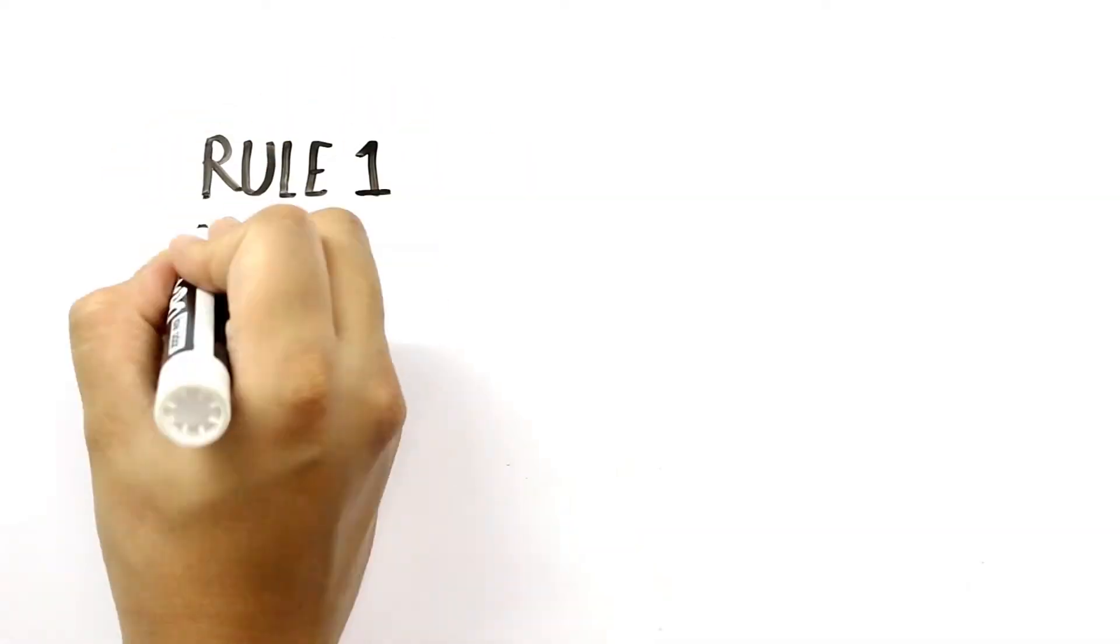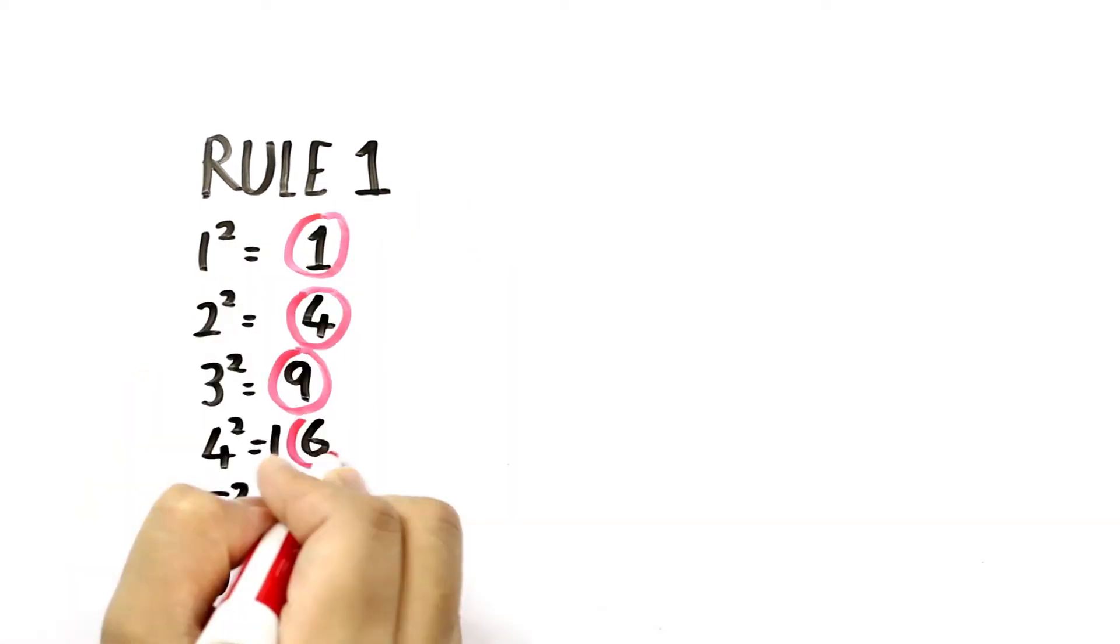Always remember that a perfect square will end in 1, 4, 6, 9, 5, and even number of zeros.